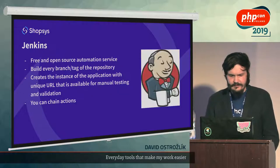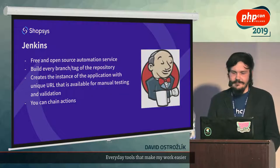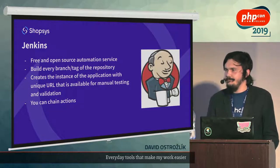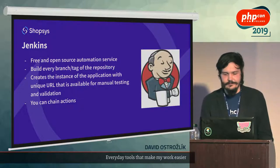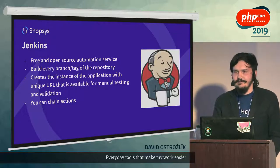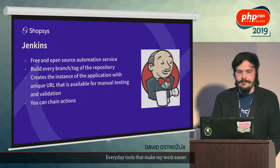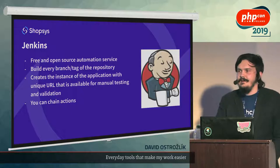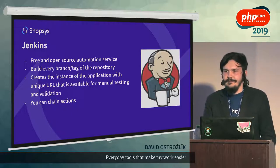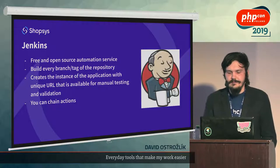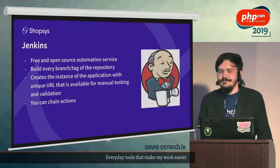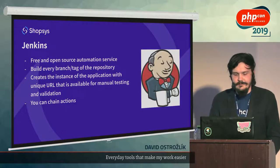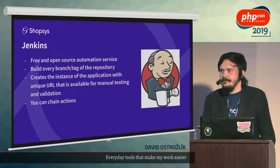Speaking of CI, the first thing is definitely Jenkins for me. It's free and open source, used for automation of most things. You can set it up to build every branch or every tag of your repository. You can build from multiple repositories as well, so you can have one Jenkins for more repos. And it's really useful because you can configure it to create an instance of the application running with some unique URL, so you can send it to your tester for manual testing or to your product owner for business validation.